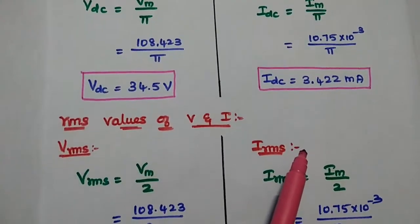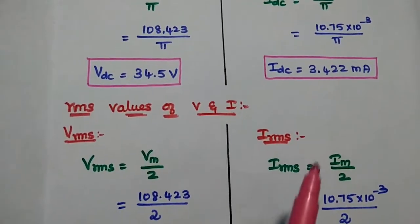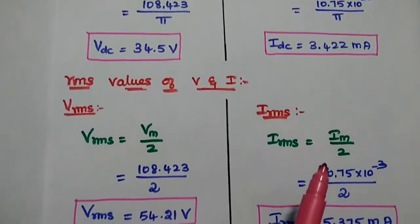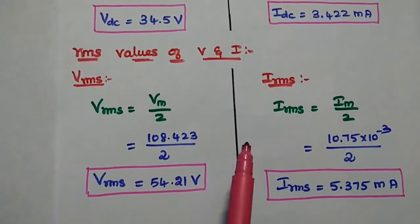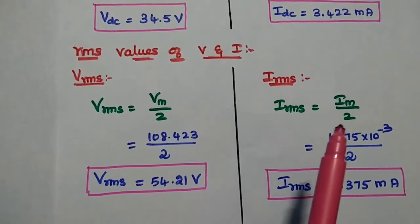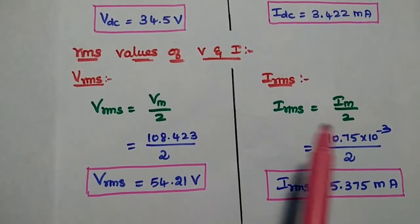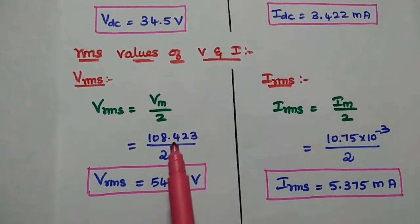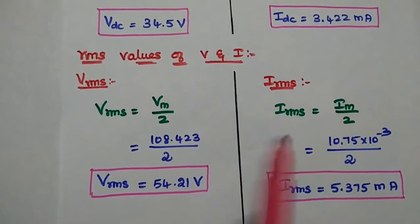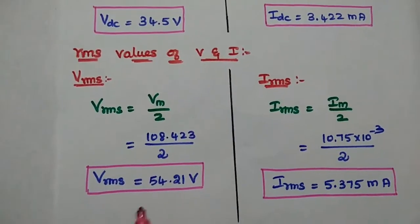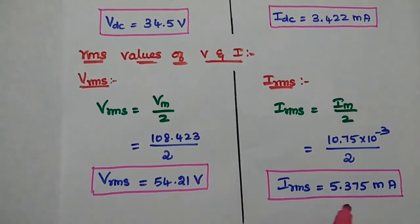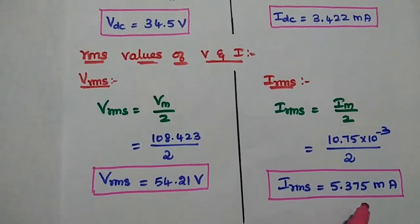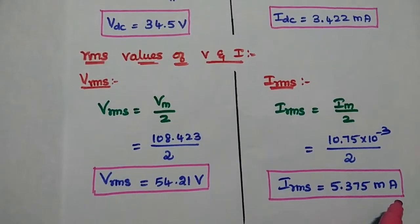The RMS values are: Vrms = Vm/2 = 54.21 V and Irms = Im/2 = 5.375 mA.